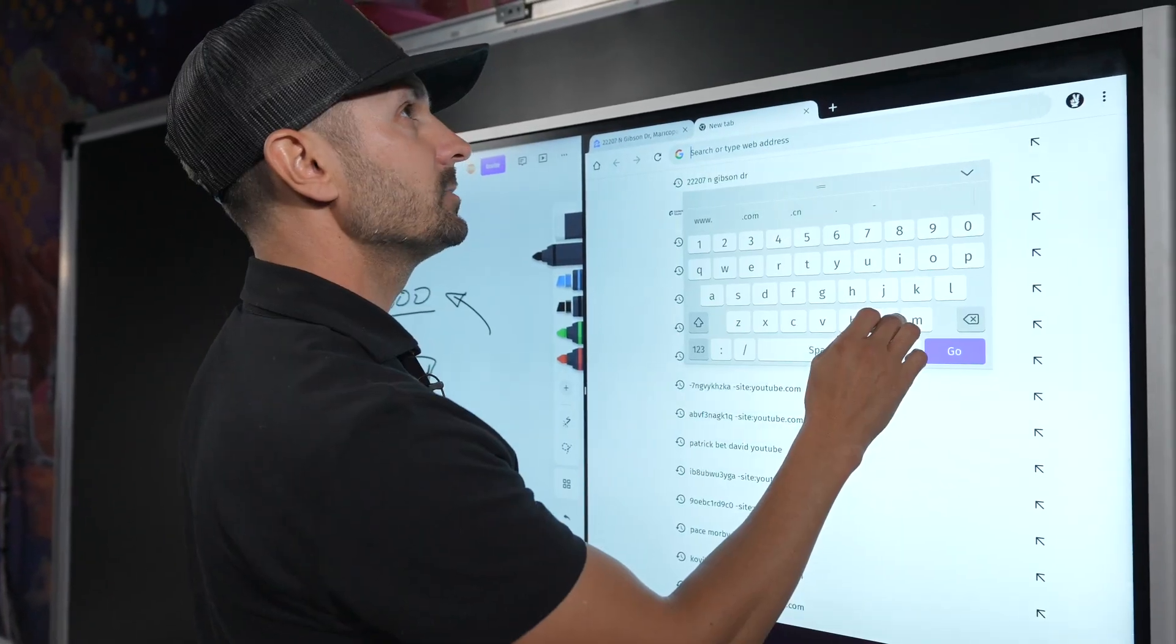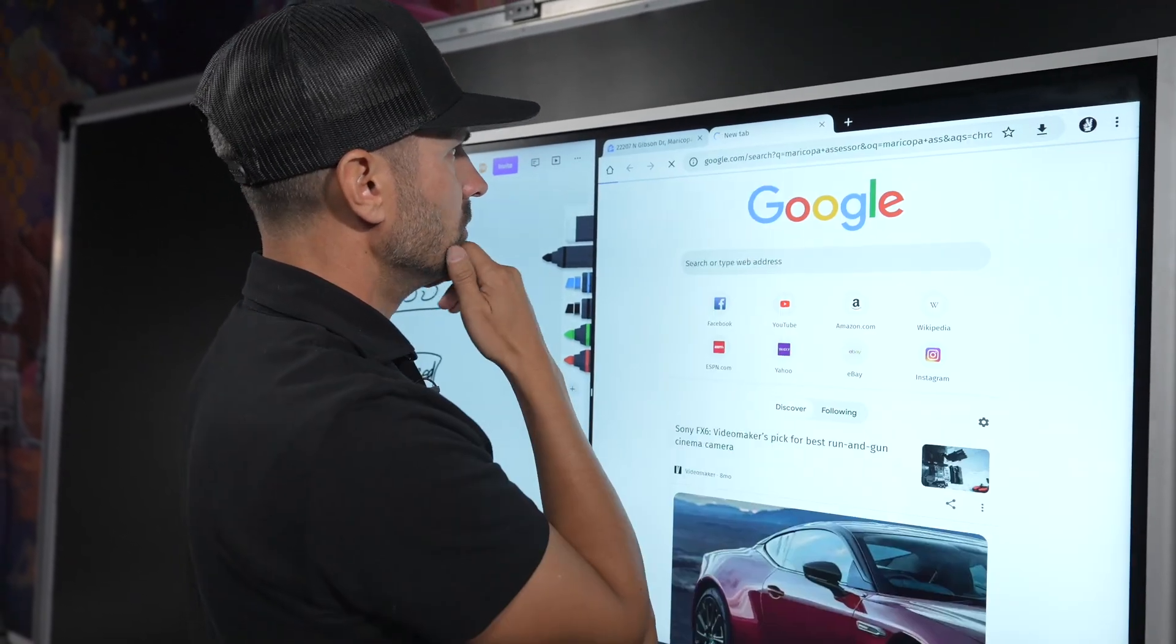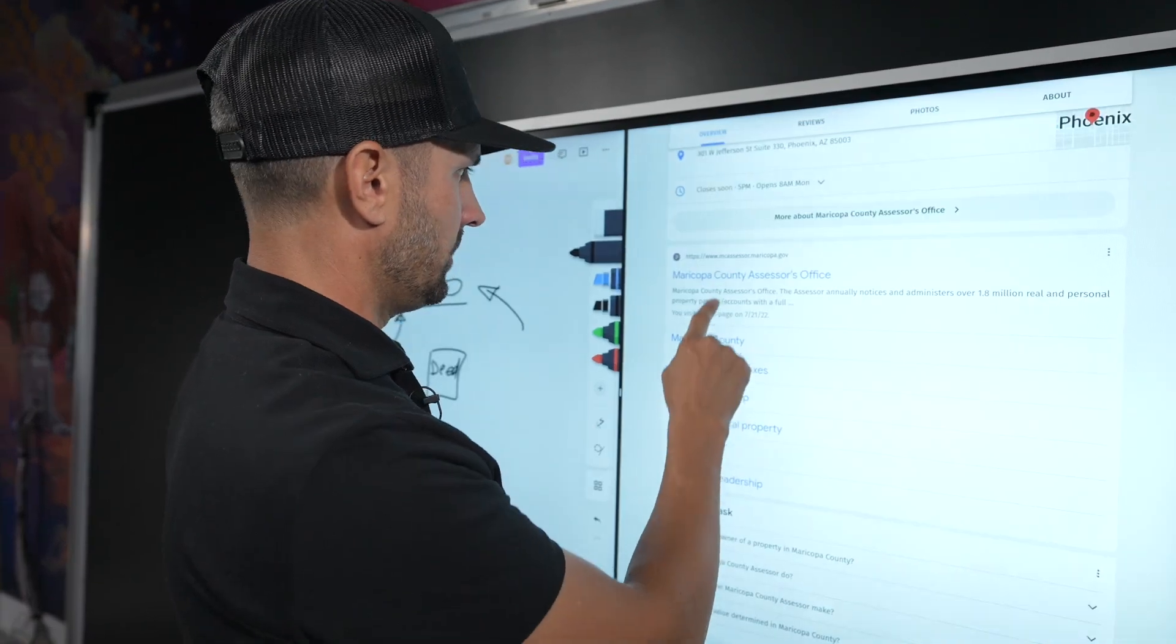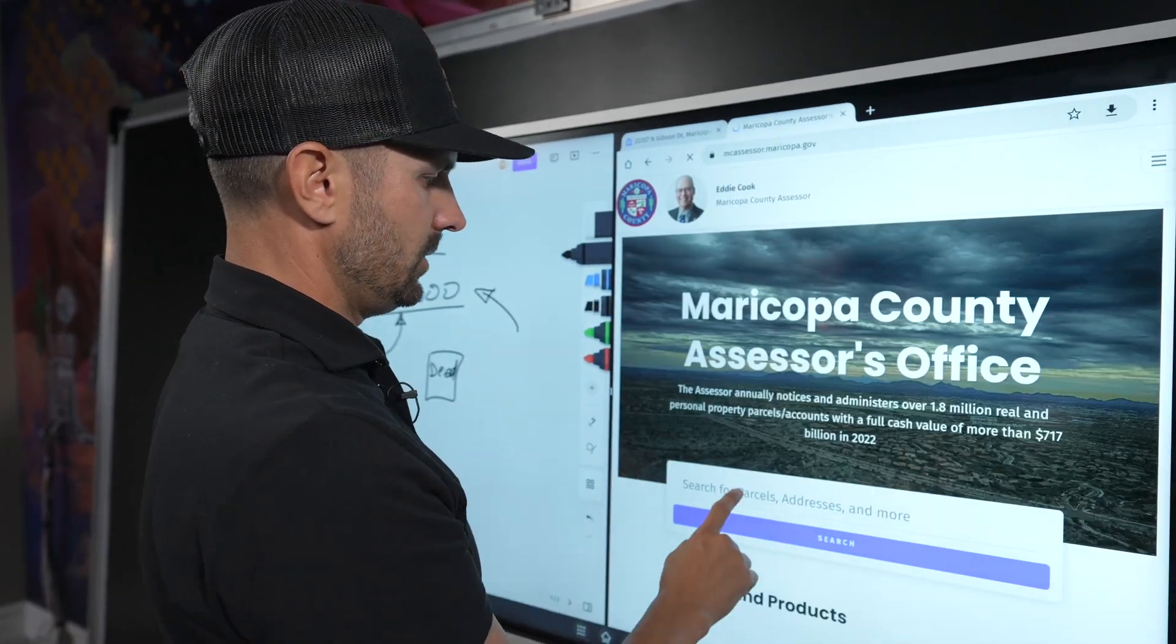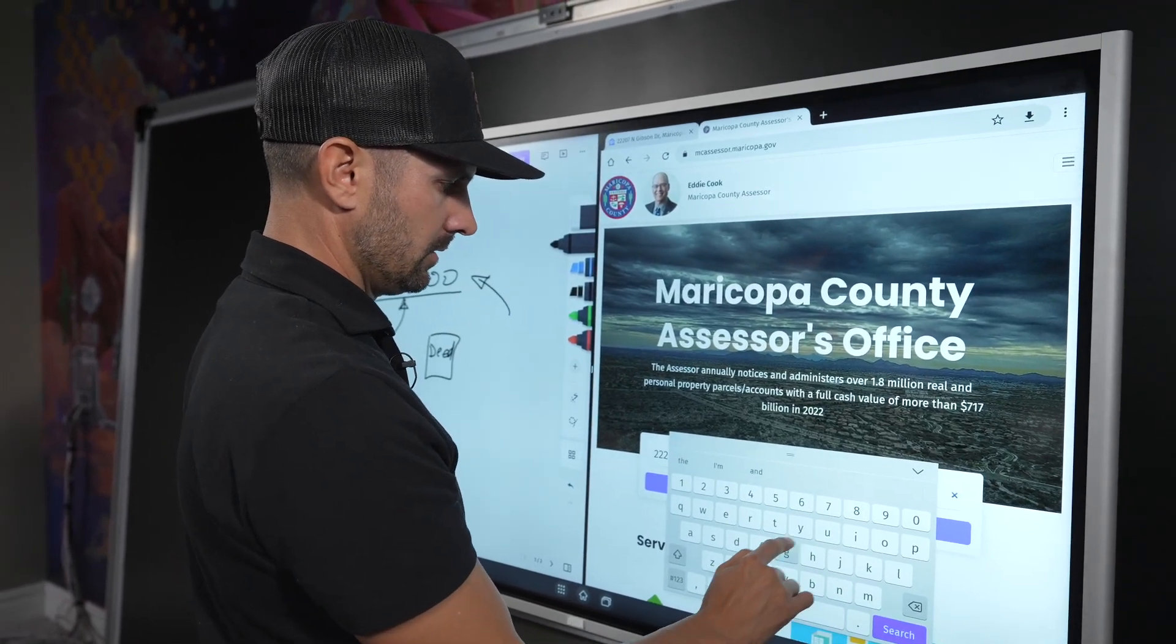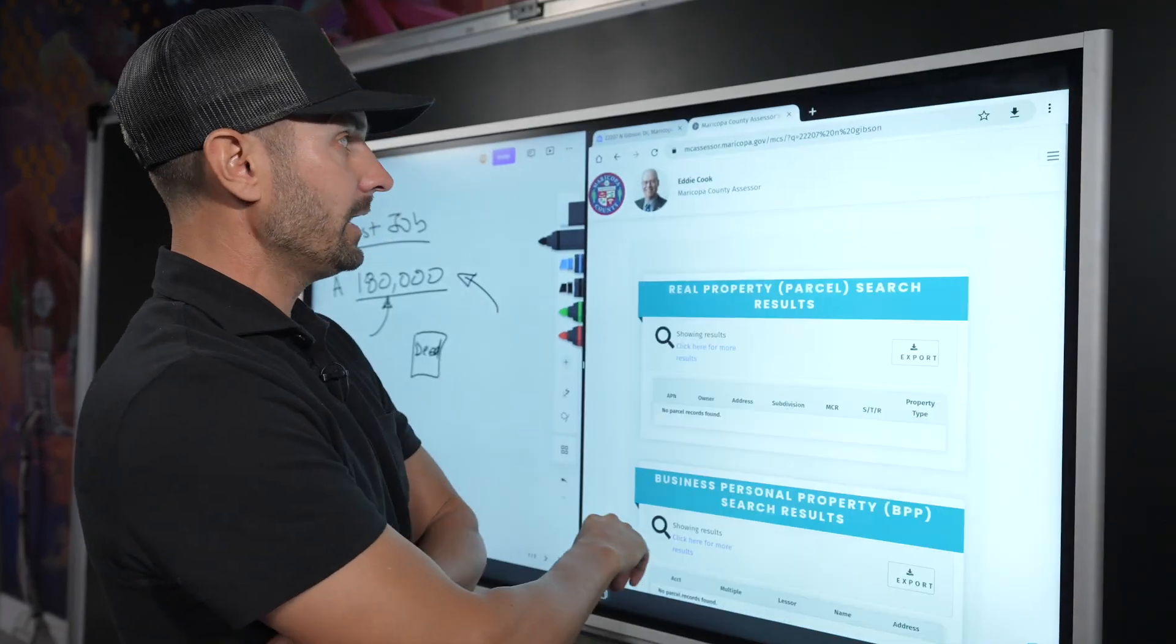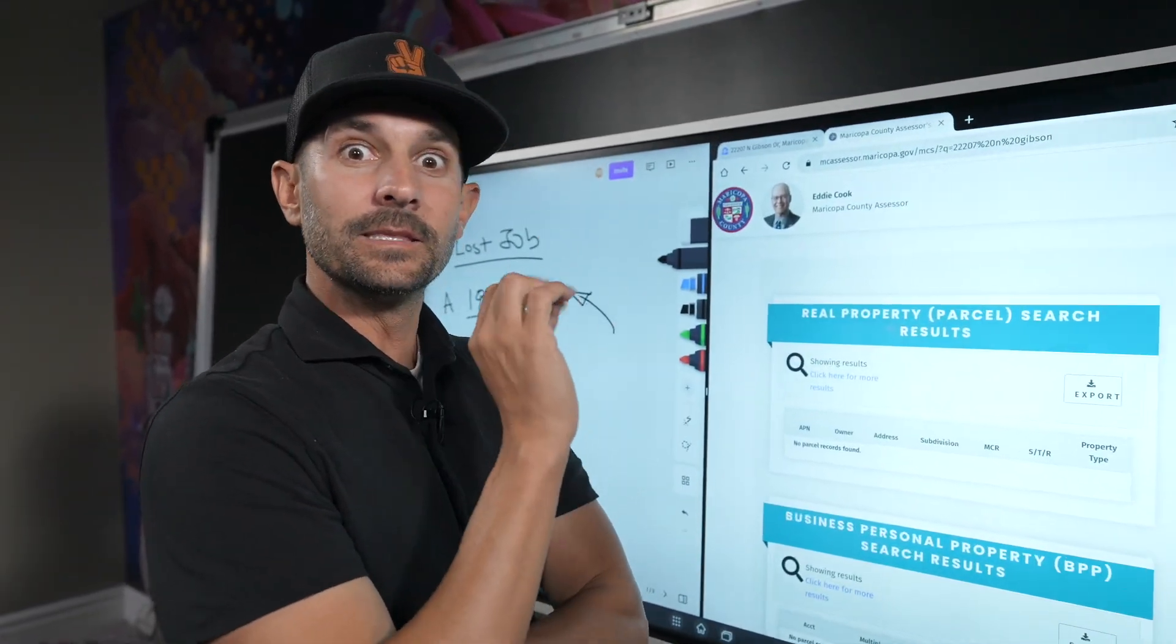In fact, I'd be curious. This house right now on Gibson, there's a bank that is owed money still in the seller's name. I'd be curious if I went to the assessor's website. Yeah, you'd go to Maricopa County Assessor. So let's go to the assessor. Let's Google that. Maricopa County Assessor's Office.